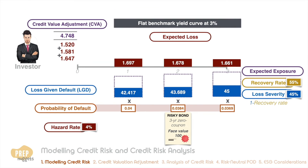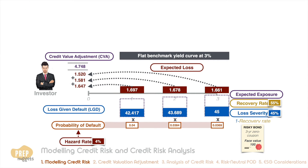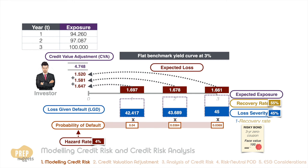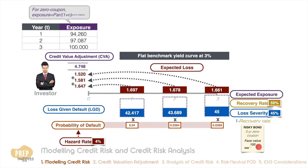This process of modeling credit risk is actually quite spreadsheet-friendly. First, gather the necessary assumptions: estimate the hazard rate, recovery rate, and loss severity for the bond issue, and obtain the benchmark yield curve. Then, for each year to bond maturity, calculate the expected exposure — the value of the equivalent risk-free bond at the end of each period. For a zero coupon bond, set the ending value for the final year at par and discount back to calculate exposures for the preceding years.